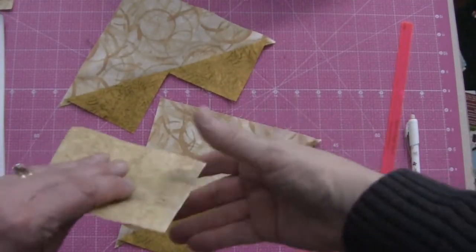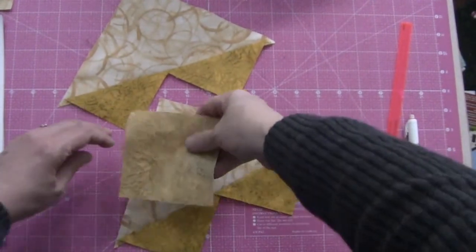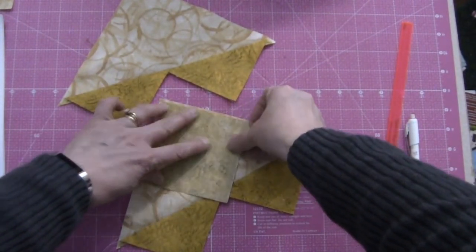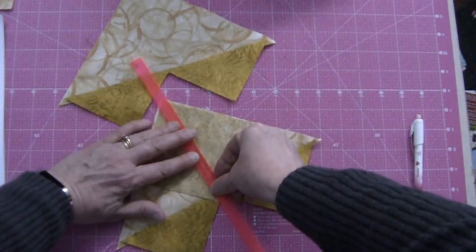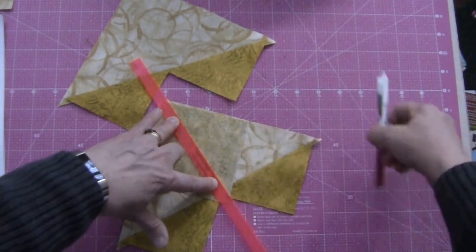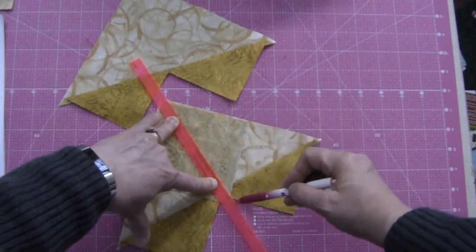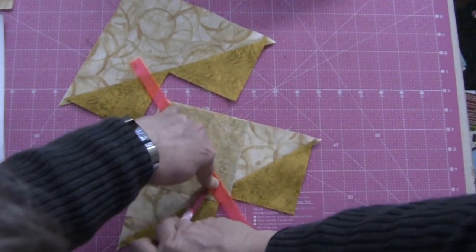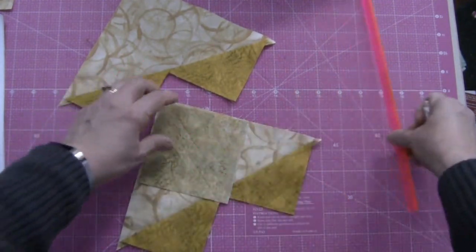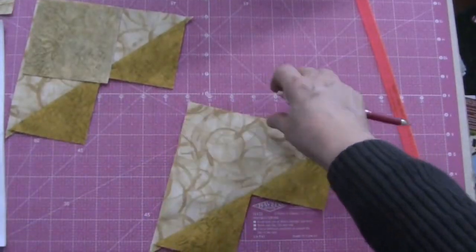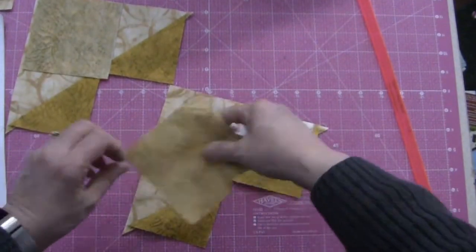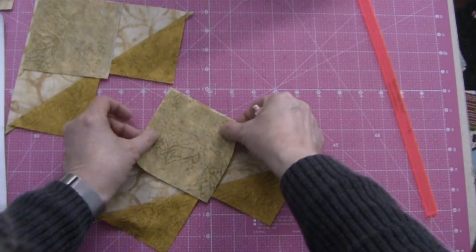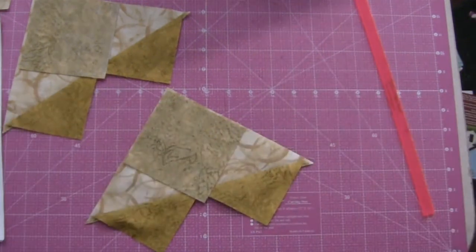Okay, there's the first half of our flying geese done. And so I'm just going to position on the next squares, draw my line, stitch, separate, press, and trim these flying geese to size. And then we will have all of the pieces we need to start assembling our block. So I'll see you back here and we'll start the assembly.